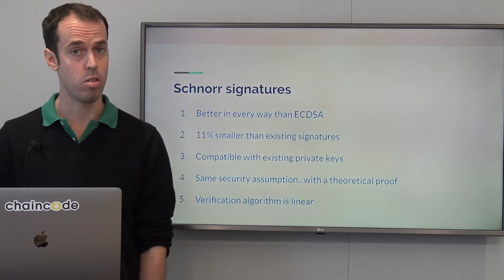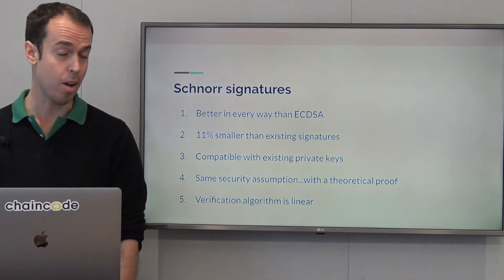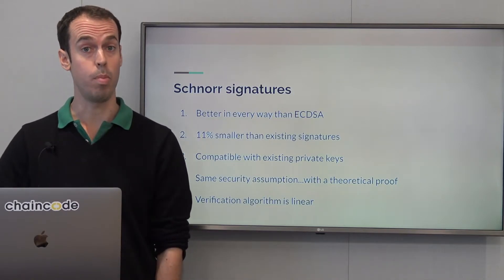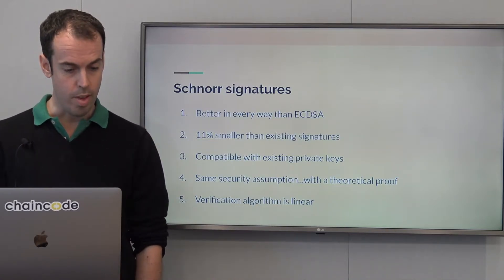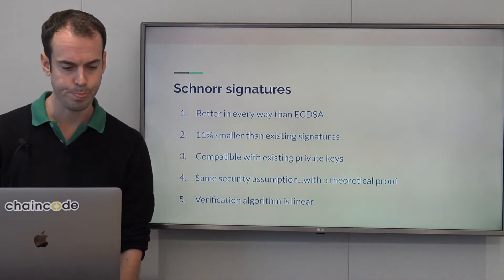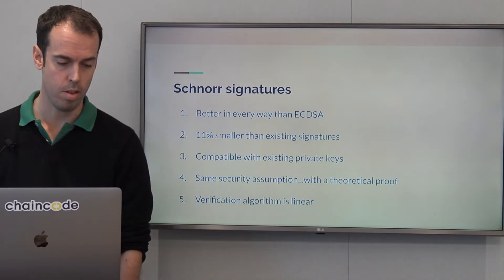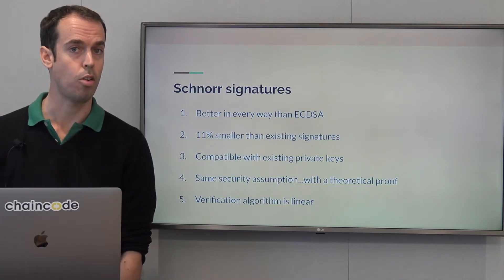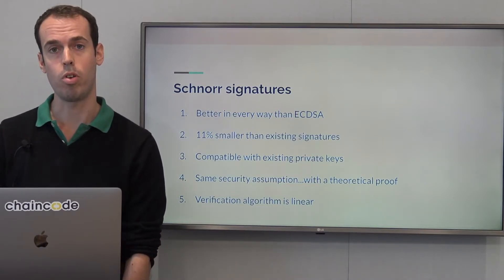So let's talk about Schnorr signatures briefly. Why are people excited about Schnorr signatures? They're better in every way than what we currently use on Bitcoin, which is ECDSA. The encoding in BIP Schnorr is more compact than the encoding for ECDSA signatures. They're compatible with existing private keys and have the same security assumption with a form of proof. Verification is linear in the public keys and the nonces, which means we can do things like aggregate public keys and aggregate signatures, and tweak public keys and signatures, which allows us to embed scripts within a public key.